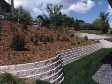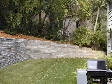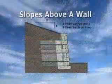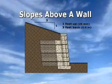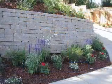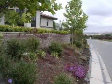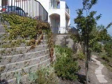Slopes can occur above or below a wall. Slopes above a wall will add more pressure and weight. Try to maintain a maximum slope of 3 to 1 above the wall, where you have a ratio of 1 up to 3 back. A slope below the wall may reduce stability and be prone to erosion. Contact your local engineer for assistance with this type of wall design.